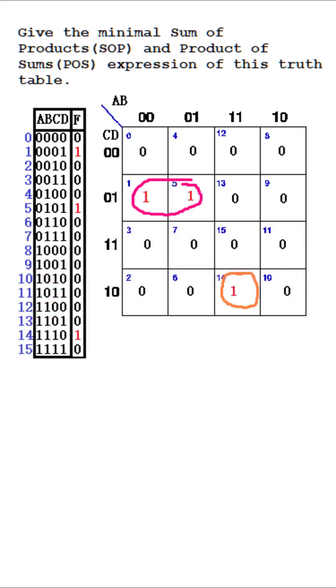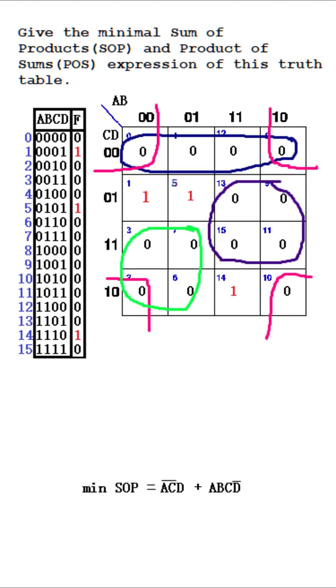In the minterm cluster, we have two groups, giving us two product terms that get summed up to become the minimal SOP expression.